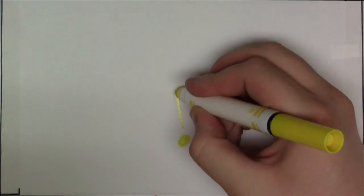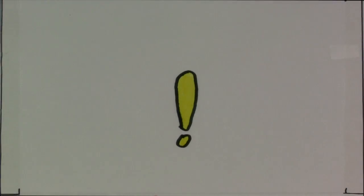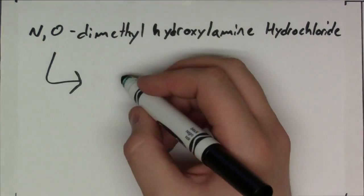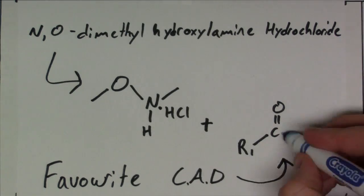But you're smart, so you devise a means of lowering the reactivity of the intermediate molecule, preventing the over-addition from happening. You take this fancy molecule, NO-dimethylhydroxylamine hydrochloride, and react it with your favorite carboxylic acid derivative.